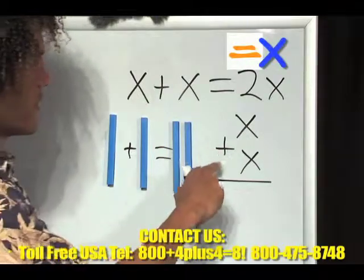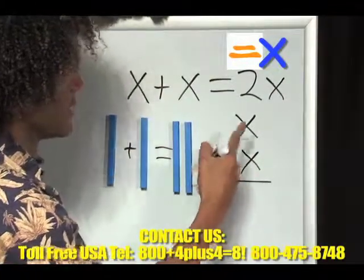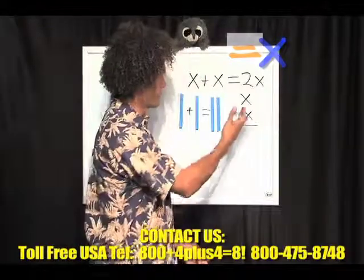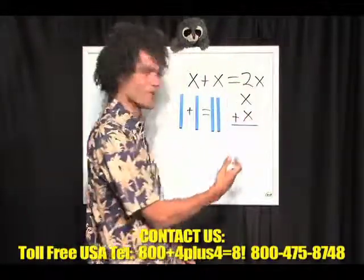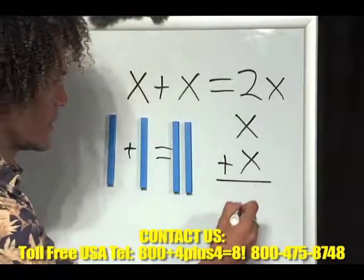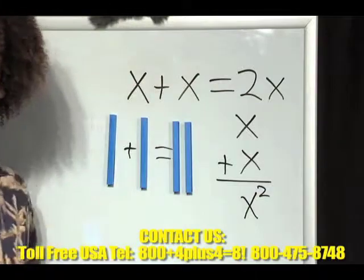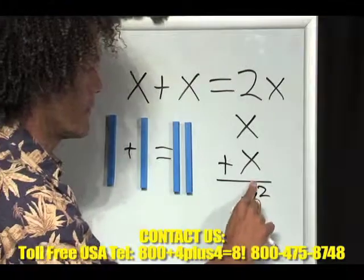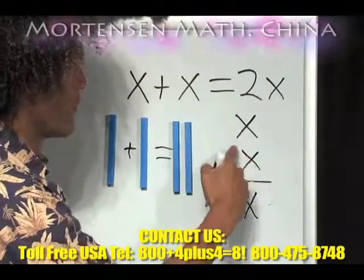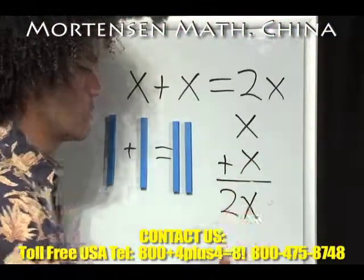Now, many high school — and sometimes college — students have a hard time here when they see this, asking: where'd the two come from? What's going on here? What happened? I have an x and another x. Is that two of them? Well, we don't have an x squared. We have one x and another x, which is just 2x.